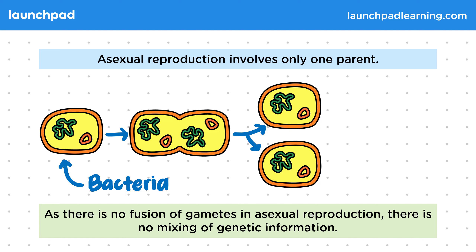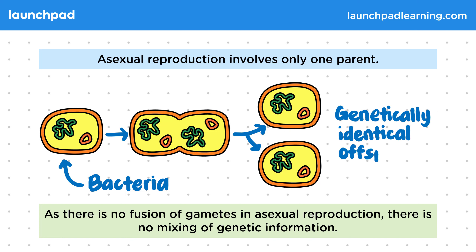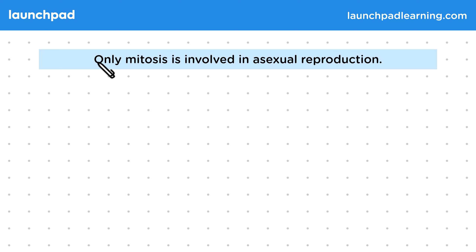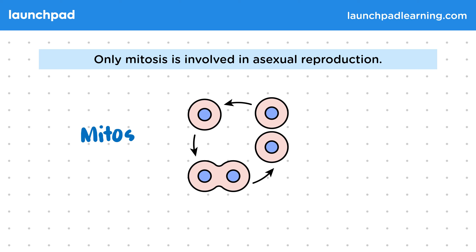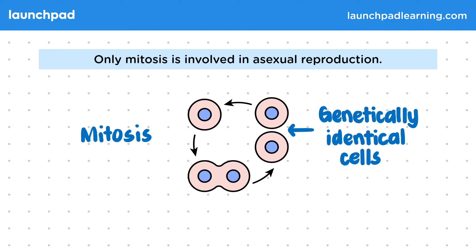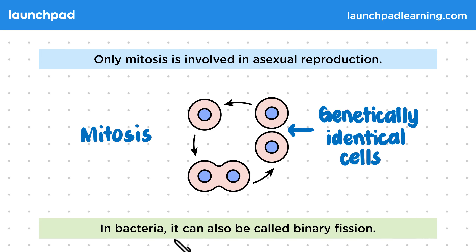This leads to genetically identical offspring, also known as clones. So if gametes aren't involved, what type of cell division allows asexual reproduction? Only mitosis is involved in asexual reproduction. Remember, during mitosis there is one parent cell that divides to produce two genetically identical daughter cells. In bacteria, it can also be called binary fission.